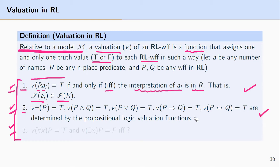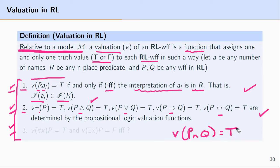The other case is when the main operator of a predicate logic well-formed formula is a truth-functional operator — negation, conjunction, disjunction, conditional, or biconditional. There's nothing new to learn here. These formulas are determined in the same way as in propositional logic. For example, the conjunction P and Q is true if and only if the valuation of P is true and the valuation of Q is also true.